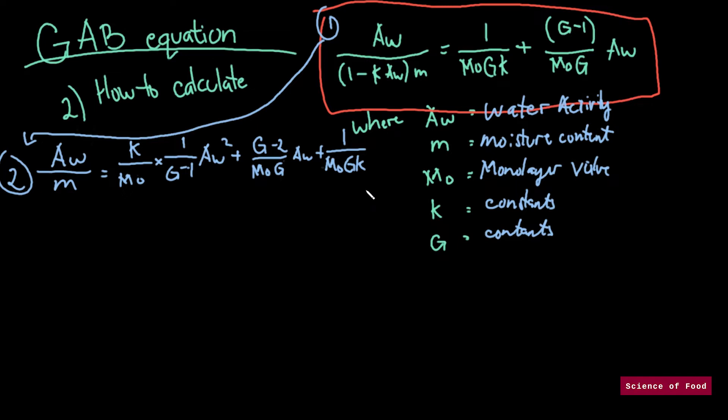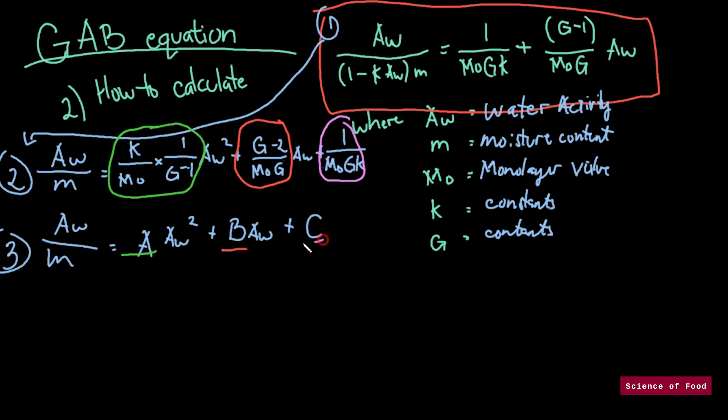And if you can see, there's a semblance to the quadratic equation. And so that we can see it more, let's manipulate it further. So water activity over M is equal to A water activity squared plus B water activity plus C. So what I'm gonna do is encircle which is which. So this group is equal to A. This group right here is equal to B. And this whole coefficient group is equal to C.